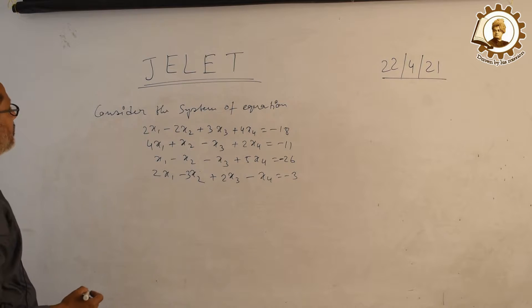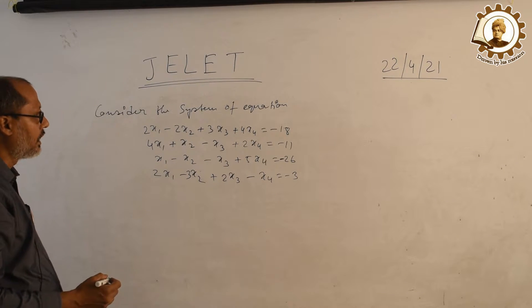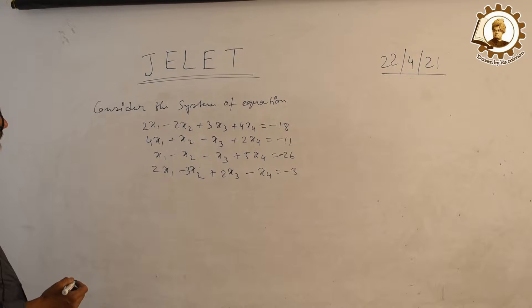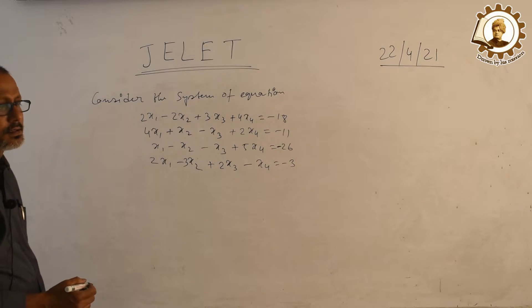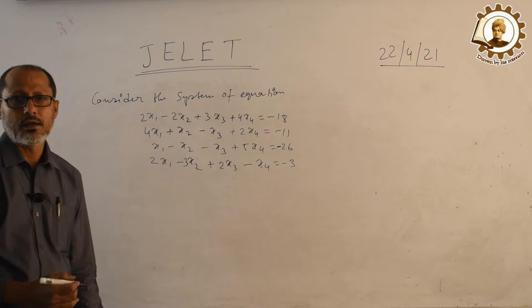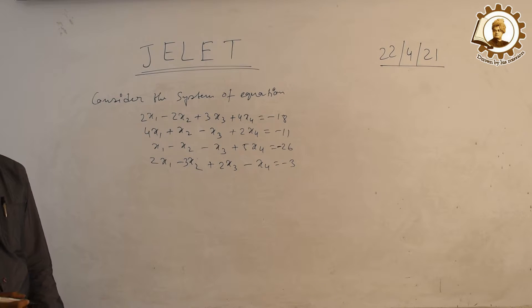First, here the number of variables are 4 and the number of linear equations is also 4, so we can easily find the unique value of the system of equations.